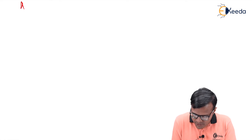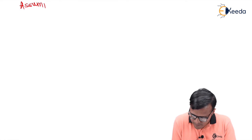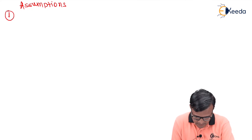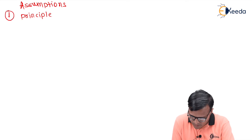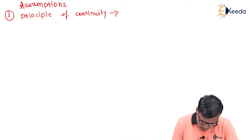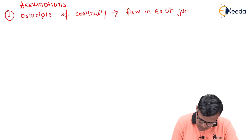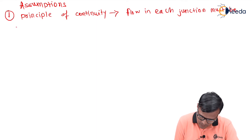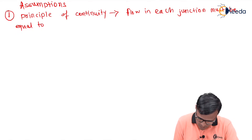Now let us see some introductory assumptions. The first assumption is the principle of continuity. According to this principle, the inflow at each junction must be equal to the outflow at that junction.